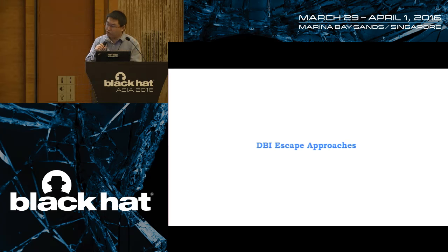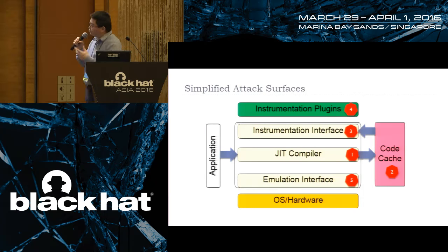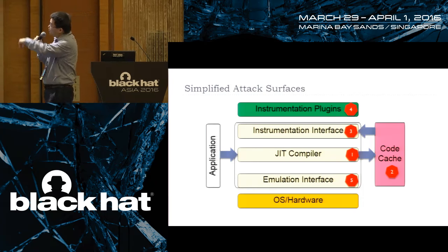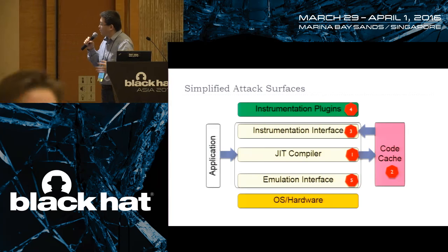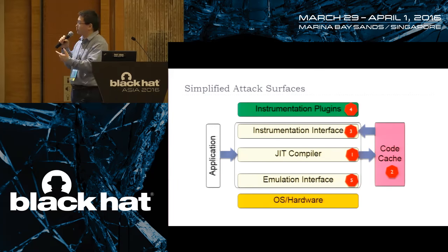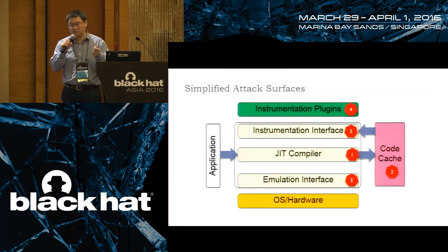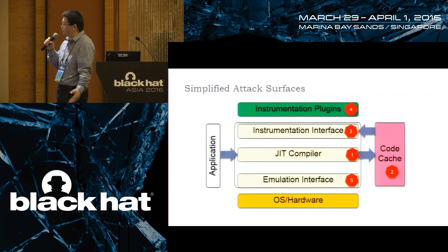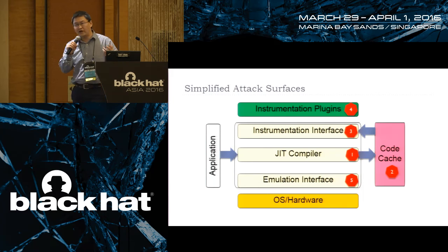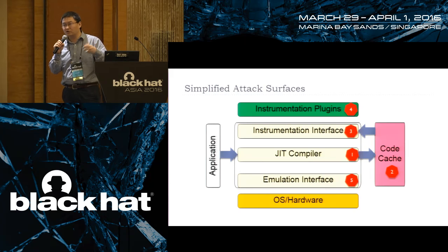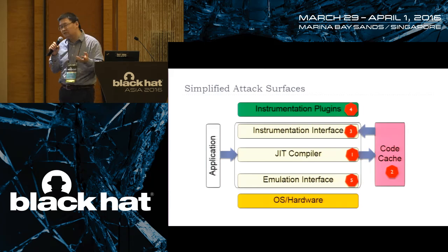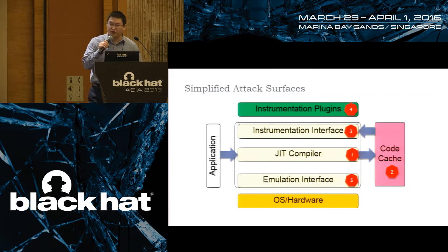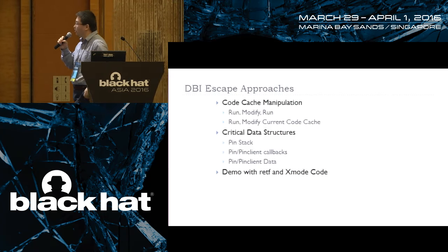Now let's discuss how to actually do the escape. Looking at the DBI architecture, there are a bunch of attack surfaces: if the JIT compiler has a bug that allows special code in the code cache, you can take over; you can attack the code cache to run your controlled code; you can compromise the instrumentation or emulation interface. Today we did a couple of approaches: code cache manipulation, modifying code cache at runtime, changing the DBI stack, and overwriting PIN and PIN client callbacks.